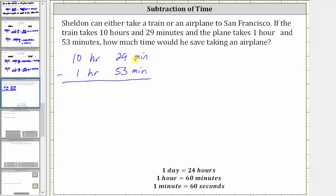Now looking at the minutes, notice how we cannot subtract 53 minutes from 29 minutes, and therefore we need to perform an exchange. We need to convert one of the 10 hours to minutes and then add it to 29 minutes.